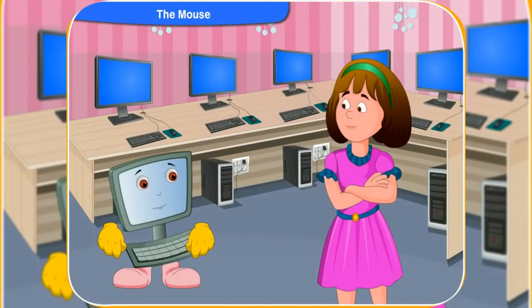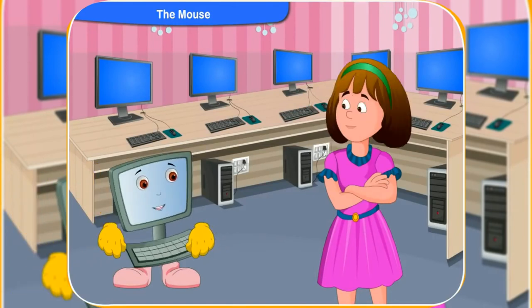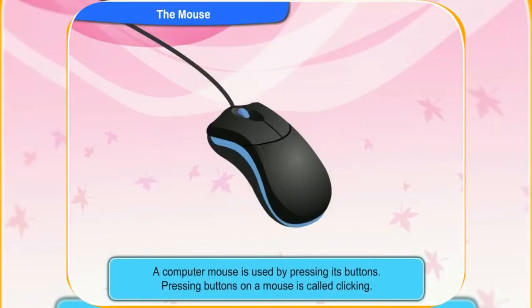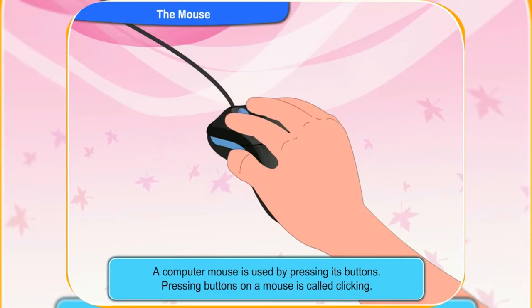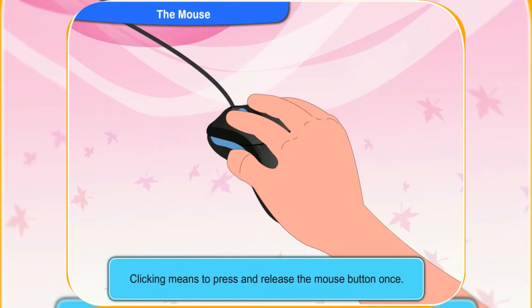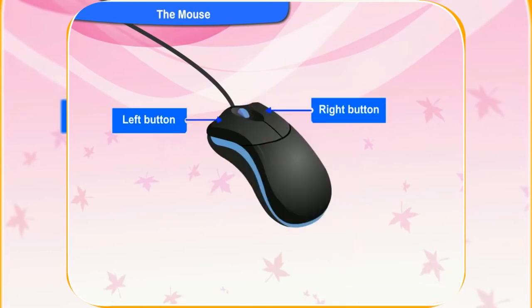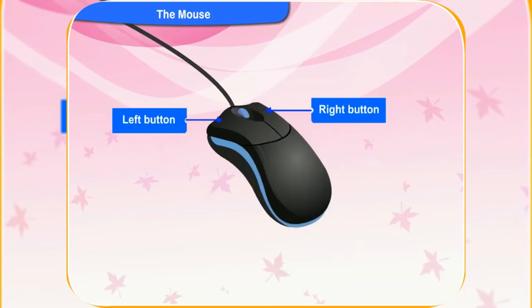Rennie, do you know what clicking means on a computer? A computer mouse is used by pressing its buttons. Pressing buttons on a mouse is called clicking. Clicking means to press and release the mouse button once. As there are two buttons on the mouse, does that mean there are different types of clicking?